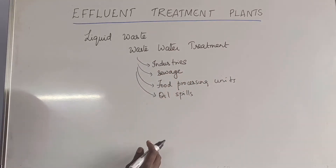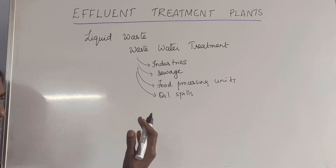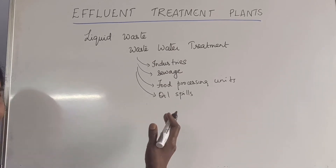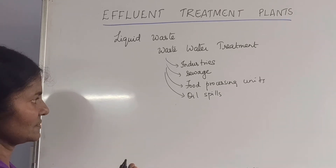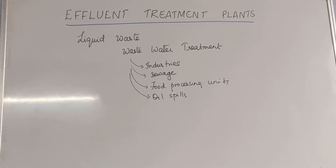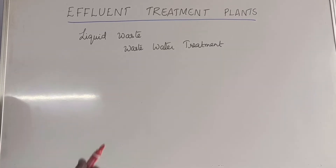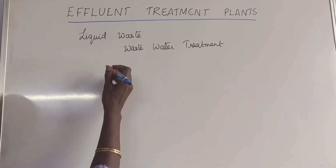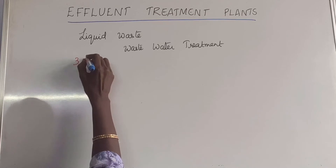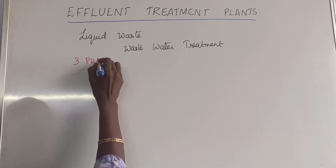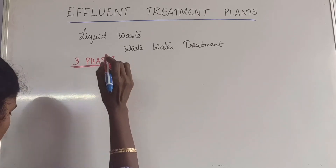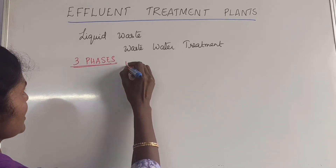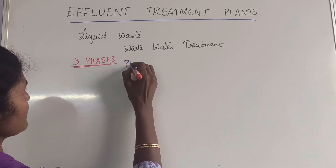This waste water has to be treated so that we can use it again — recycle it and use the recycled water for different purposes. This waste water treatment is done in three phases. The first phase is called primary treatment.